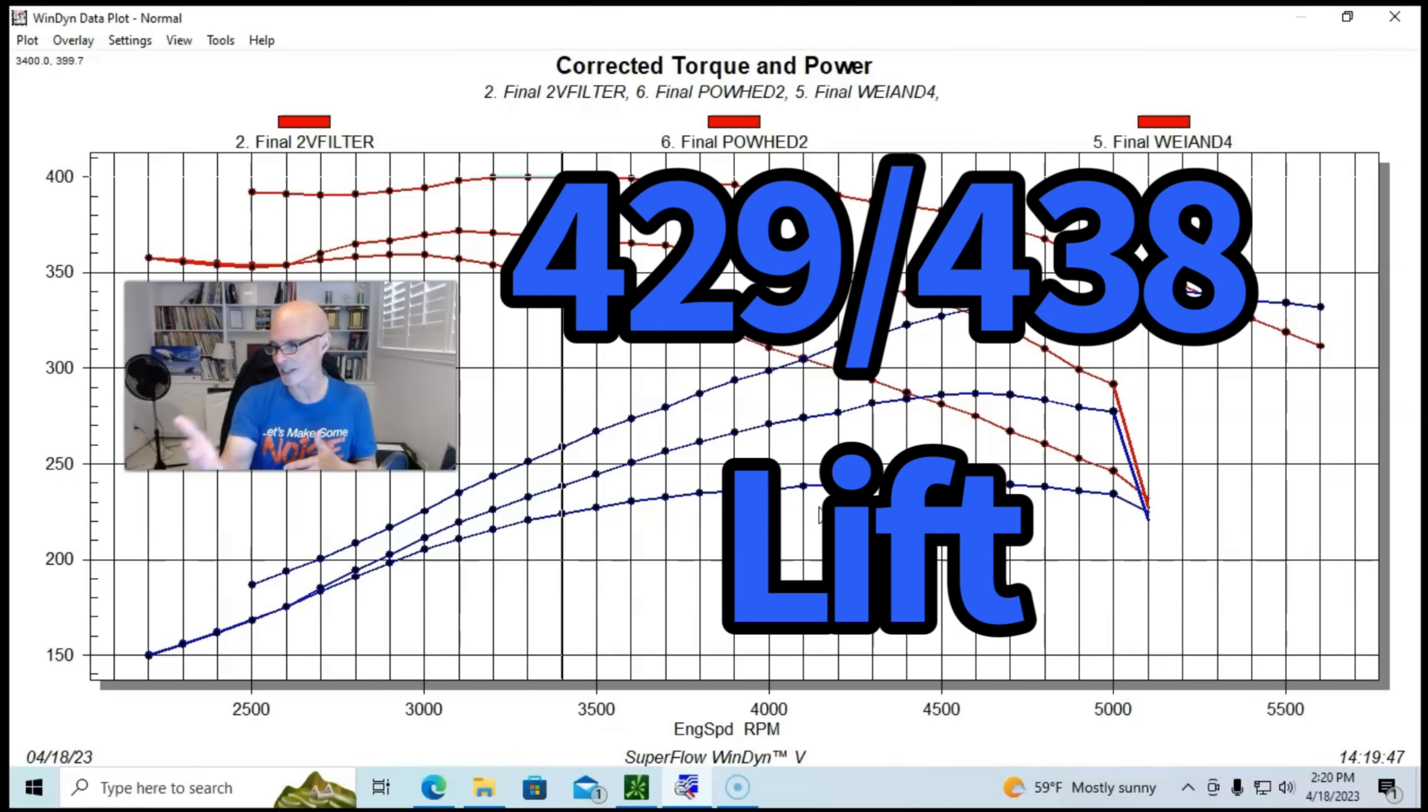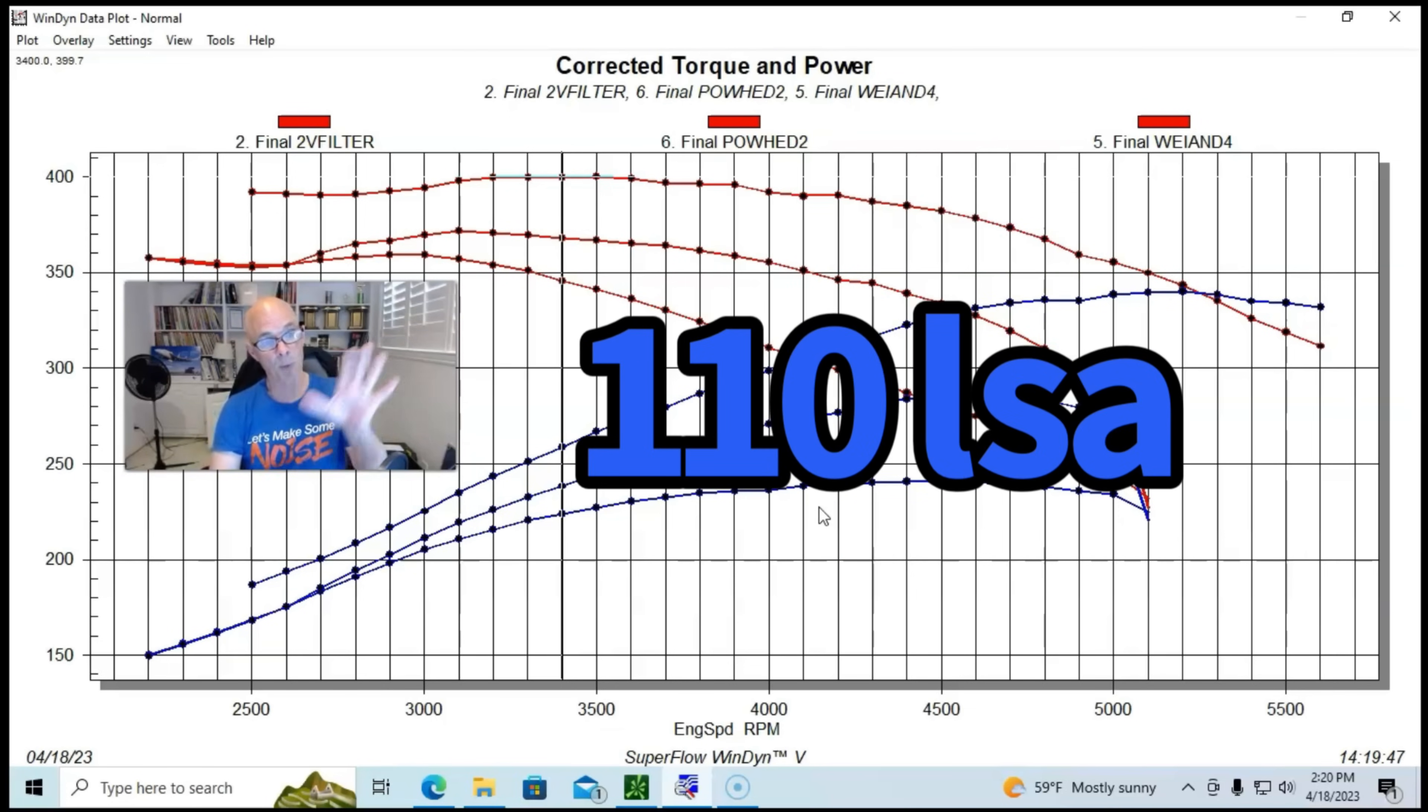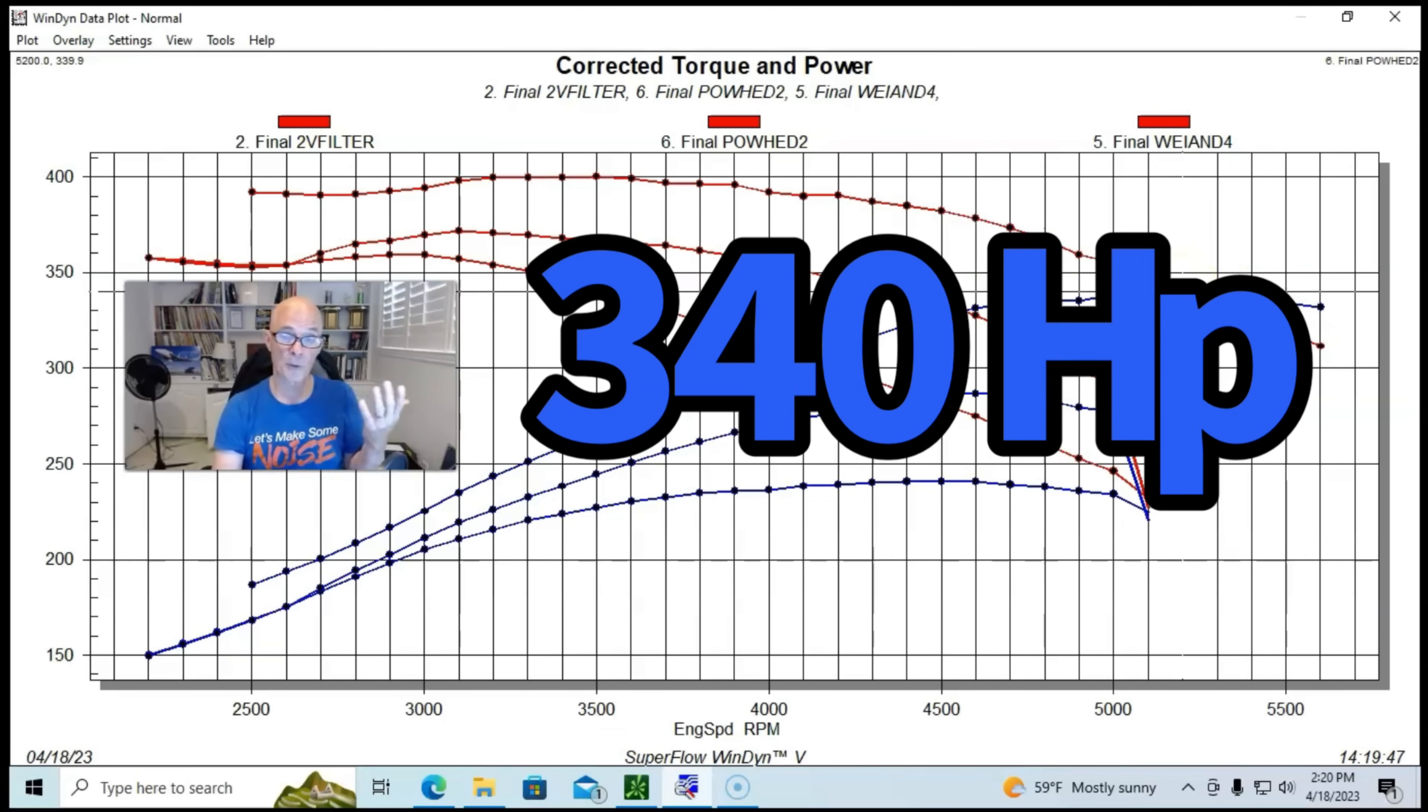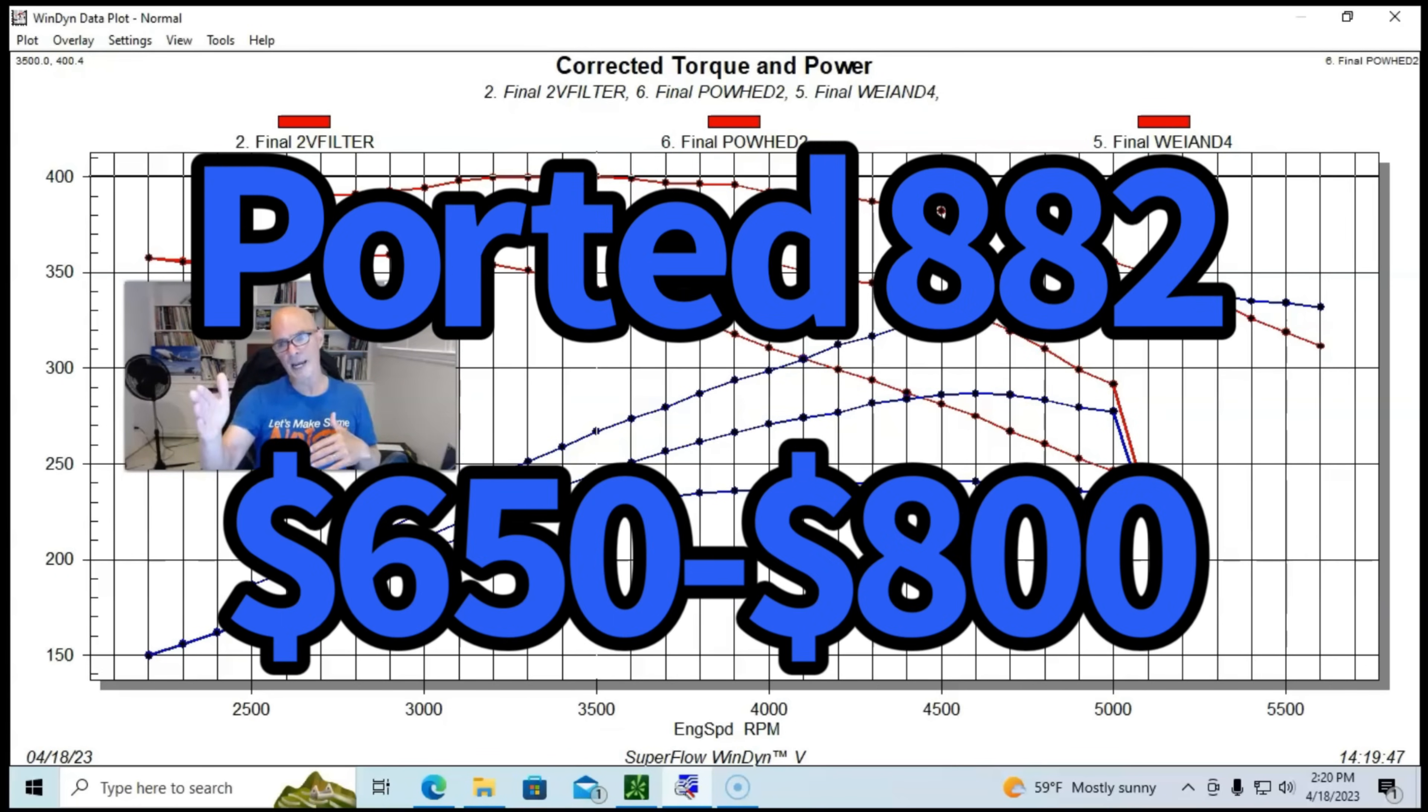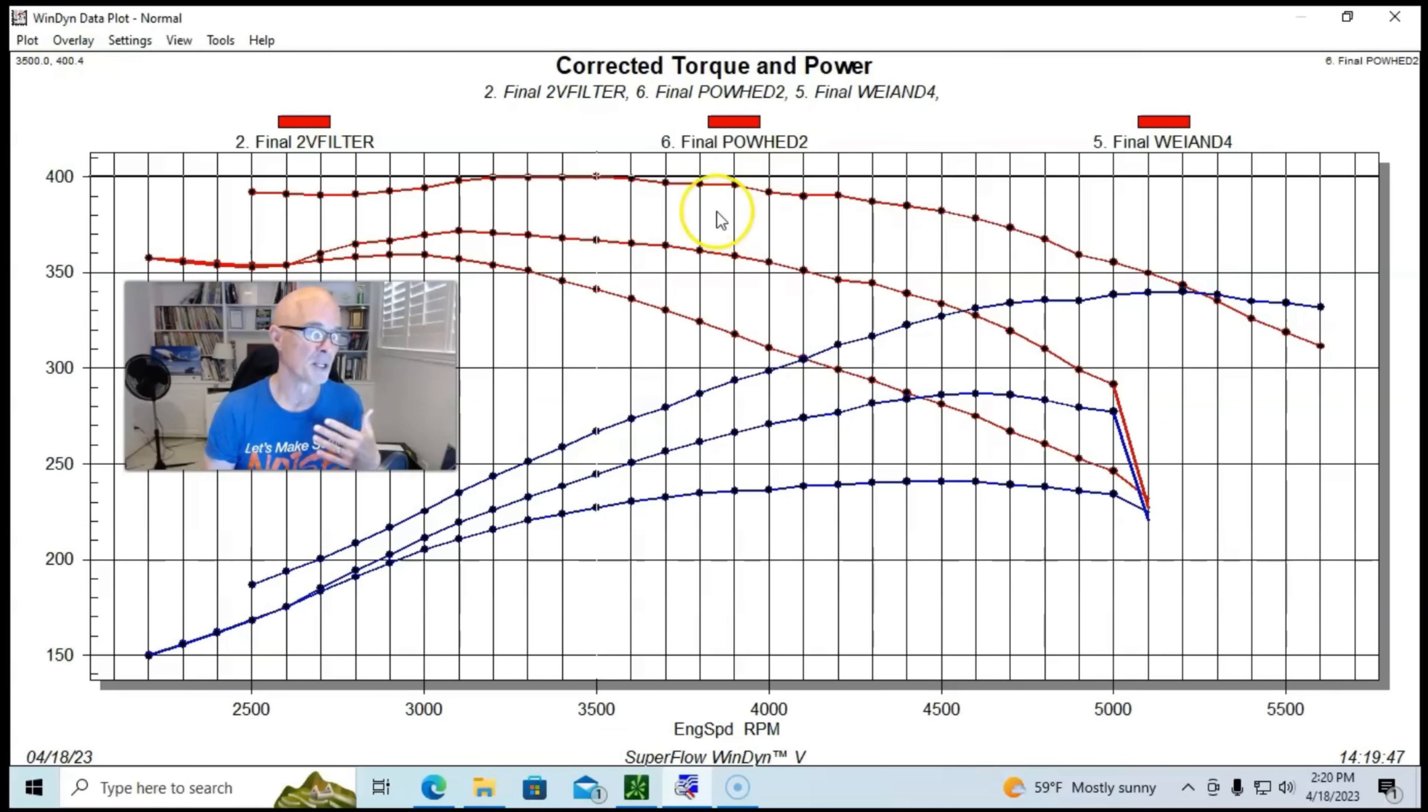The gains that we got from the ported head and cam upgrade - we kept the intake manifold and carburetor the same - 340 horsepower peak, peak torque was right up at 400 foot-pounds. Again, good gains in peak horsepower and peak torque, but more importantly gains through the entire RPM range.